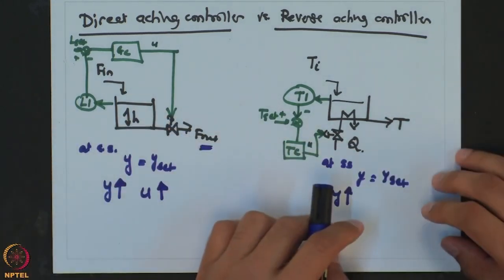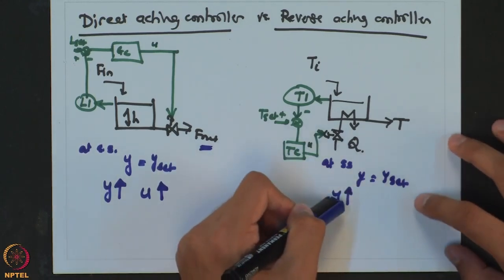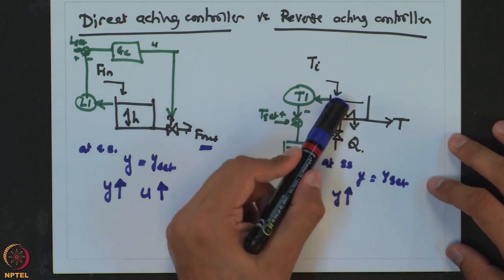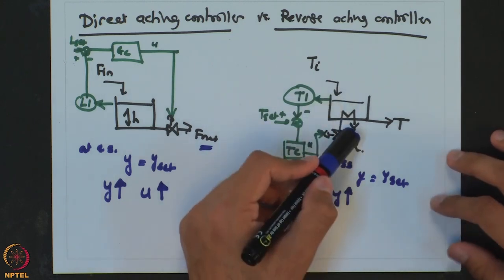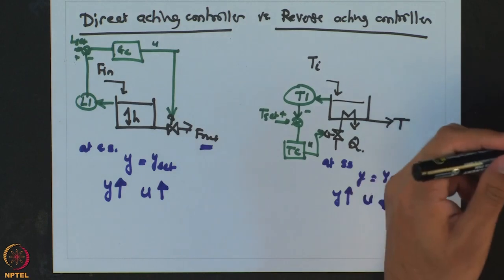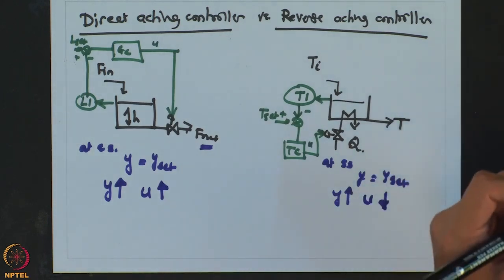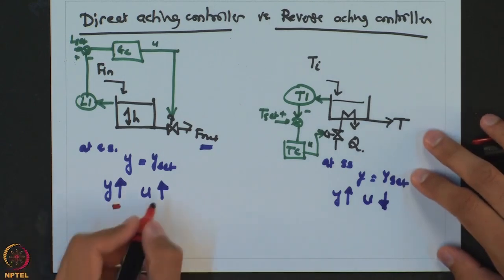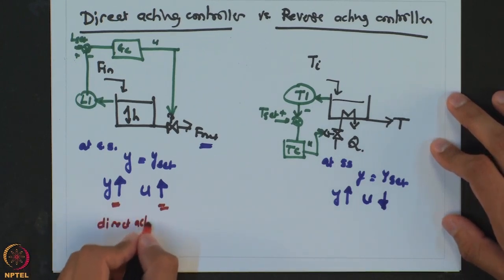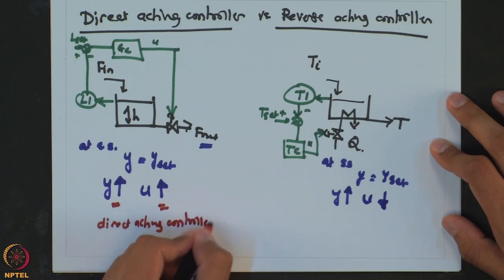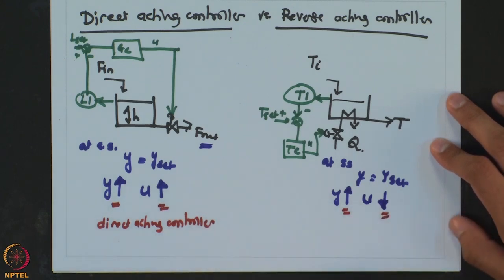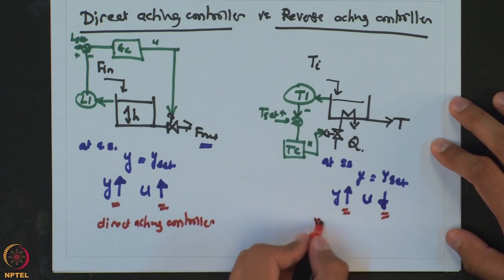Now look at the stirred tank heater case. If Y increases beyond the set point, the temperature inside the tank is above the desired value. What should the controller do? It should cut down on the heating duties applied to the system — the controller output should decrease. So you can notice the difference: in the level control case, an increase in output causes an increase in controller output, therefore it is known as a direct acting controller. In the stirred tank heater case, an increase in output causes a decrease in controller output, therefore it is known as a reverse acting controller.